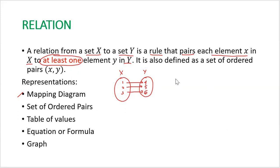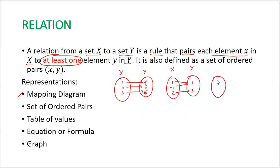There are other types of relations. One is the many-to-one relation, where elements 1 and negative 1 are both paired to y equals 1 — two values of x paired to one element in set y. Another type is the one-to-many relation, where an element in x is paired to more than one element in y. All of these are relations because each x is paired to at least one element in set y.